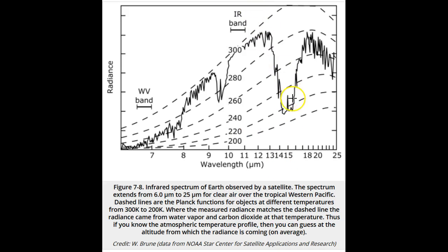Note that little spike in the middle of the strongly absorbing CO2 band. It is coming from CO2 that is warmer than the tropopause, but we know that it must be coming from above the tropopause — this makes sense, as the stratosphere is warmer than the tropopause. So we can actually learn a lot about what is being observed simply by looking at a satellite thermal-infrared spectrum like this one.